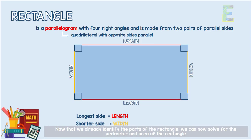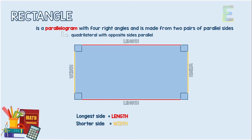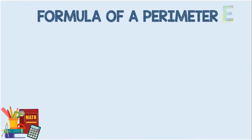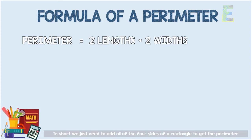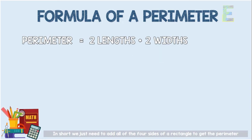Now that we have already identified the parts of the rectangle, we can now solve for the perimeter and area. Let's find out first the formula of the perimeter. The perimeter of a rectangle is just equal to the sum of the two lengths and two widths. In short, we just need to add all four sides of a rectangle to get the perimeter.